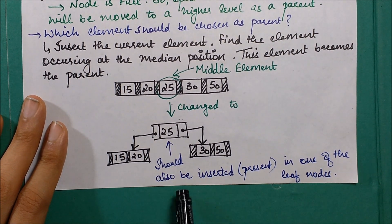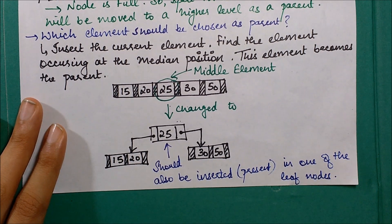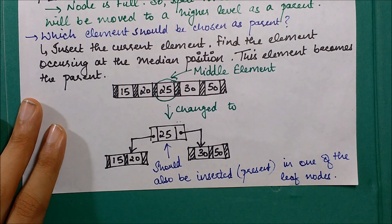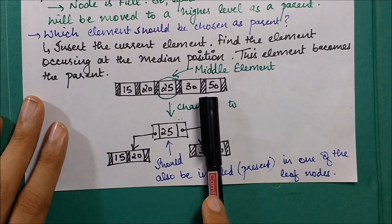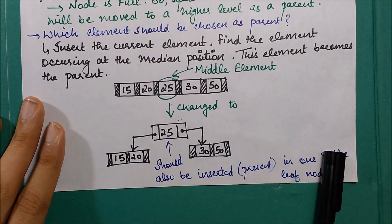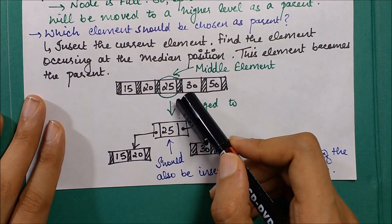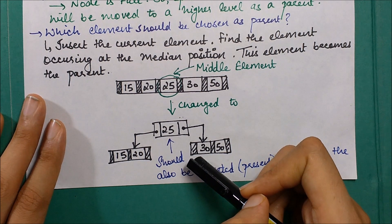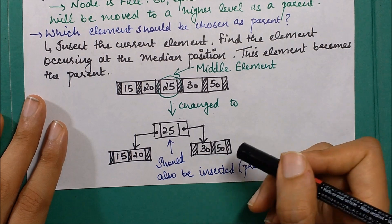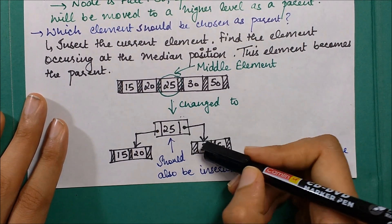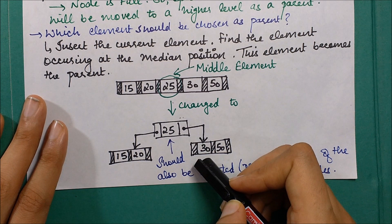An important correction: all search keys should be present at the lowest level of the tree. Although we moved 25 to a higher level, we must also retain a copy of the same element at the last level. So 25 must be retained at the leaf level.